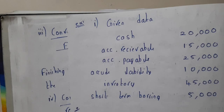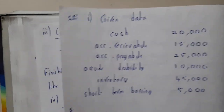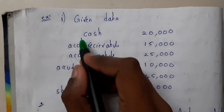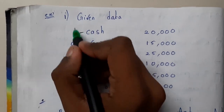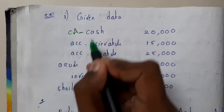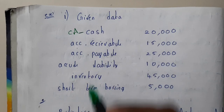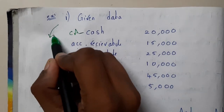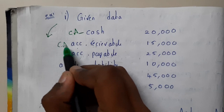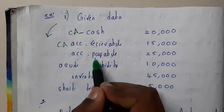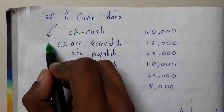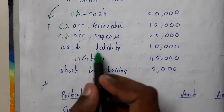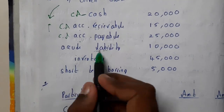The first thing you should identify is what is a current asset and what is a current liability. Cash — you are having it, so it becomes your current asset. Similarly, accounts receivable — receivable means you will be getting the money, so this also comes under current assets. Accounts payable — we need to pay the money, so this will become a current liability.